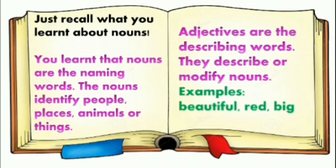Then, 'red.' Quickly write down one thing which is red. Apples — many apples are red. So because 'apples' is a noun, 'red' is an adjective. Then 'big' — quickly write down two nouns which are described by the word 'big.' The words coming to my mind were 'house' — a house can be big — and 'park' — a park can also be big.